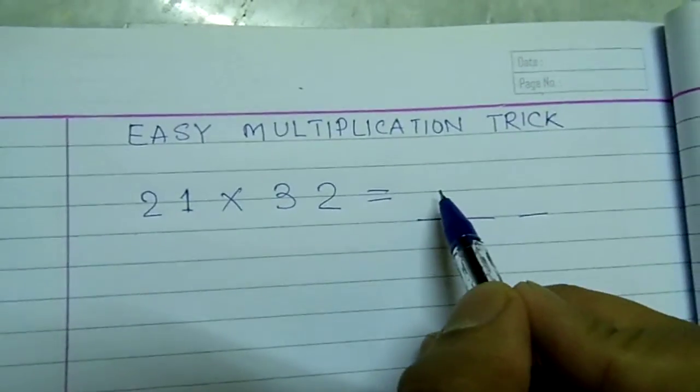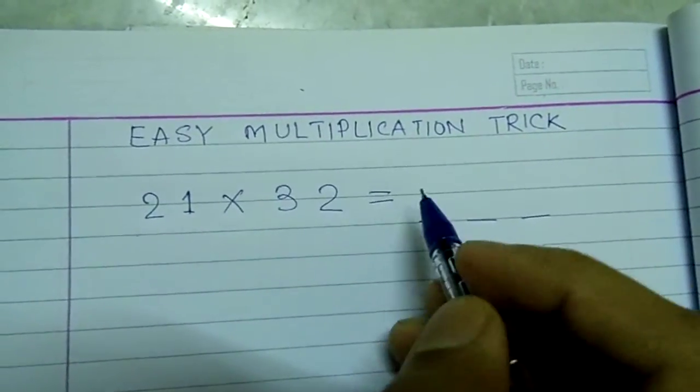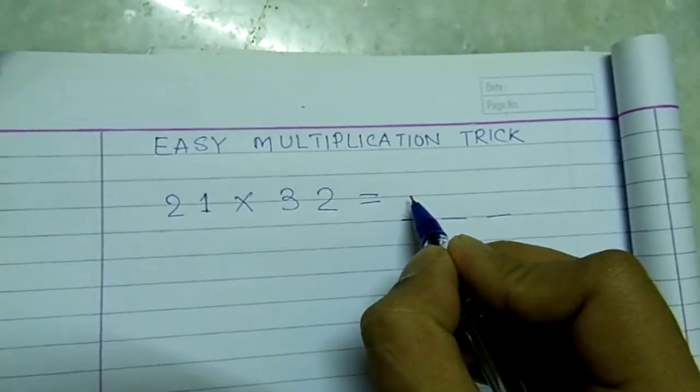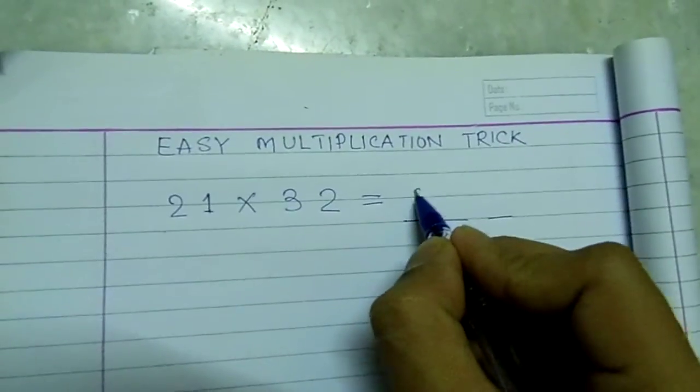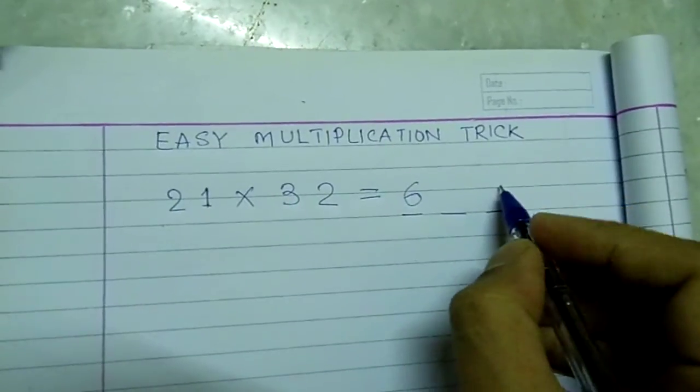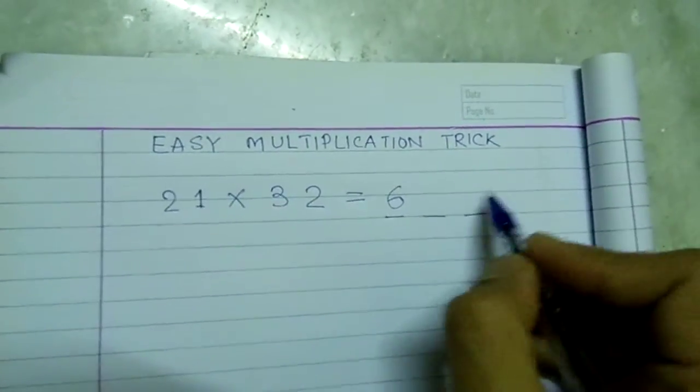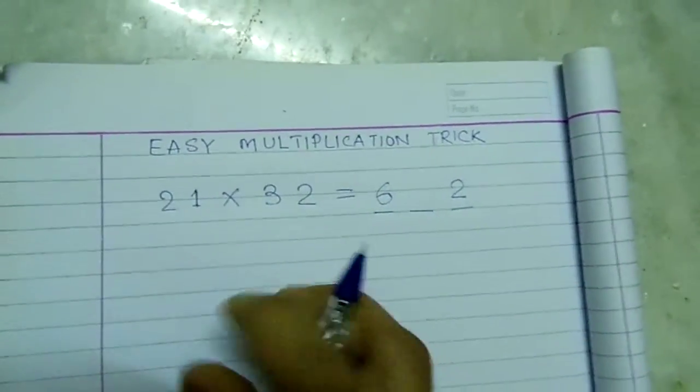To get the first digit of the product, we will multiply the first digit of the numbers and write it down. That is 2, 3, 6. To get the last digit of the product, we will multiply the last digit of these two numbers. That is 2.